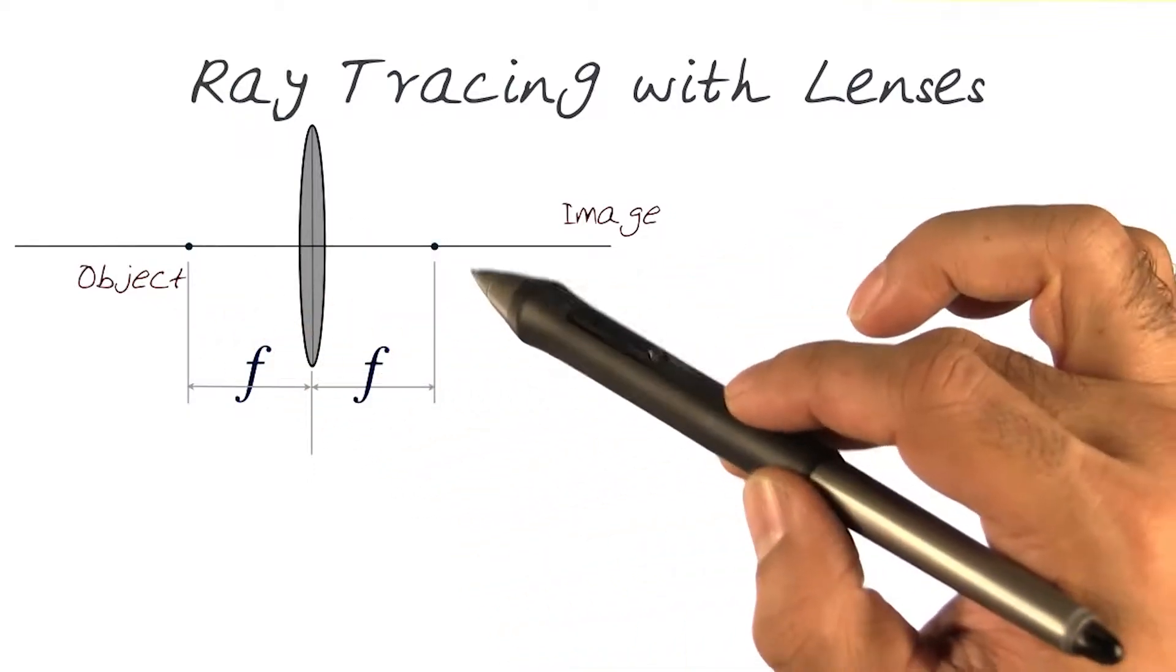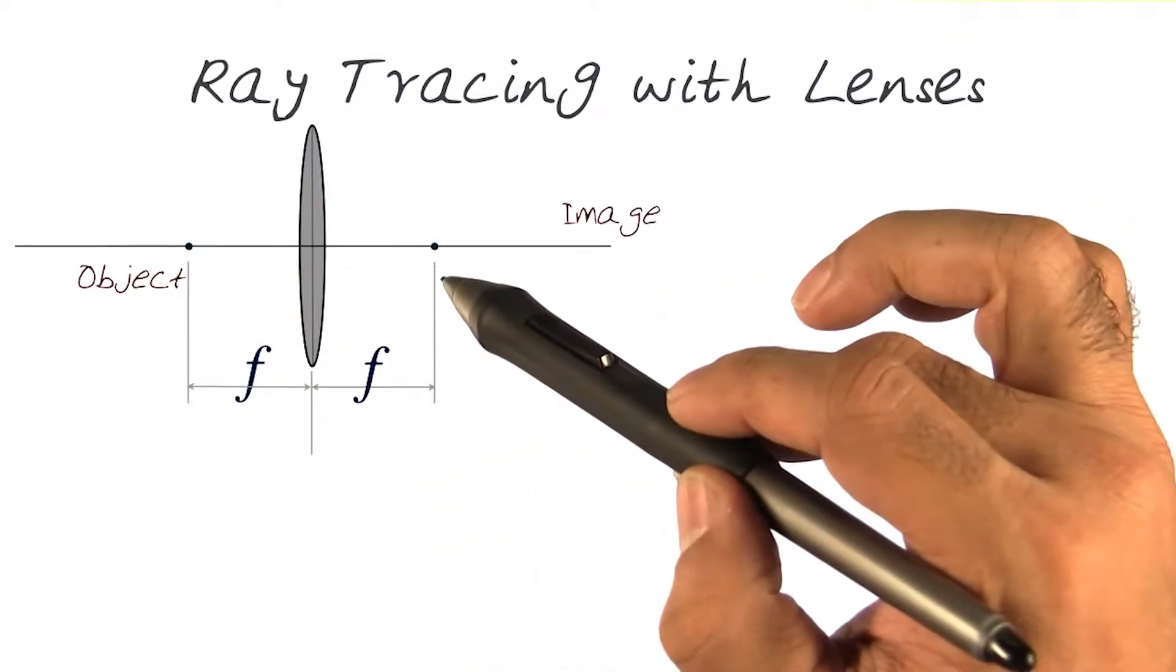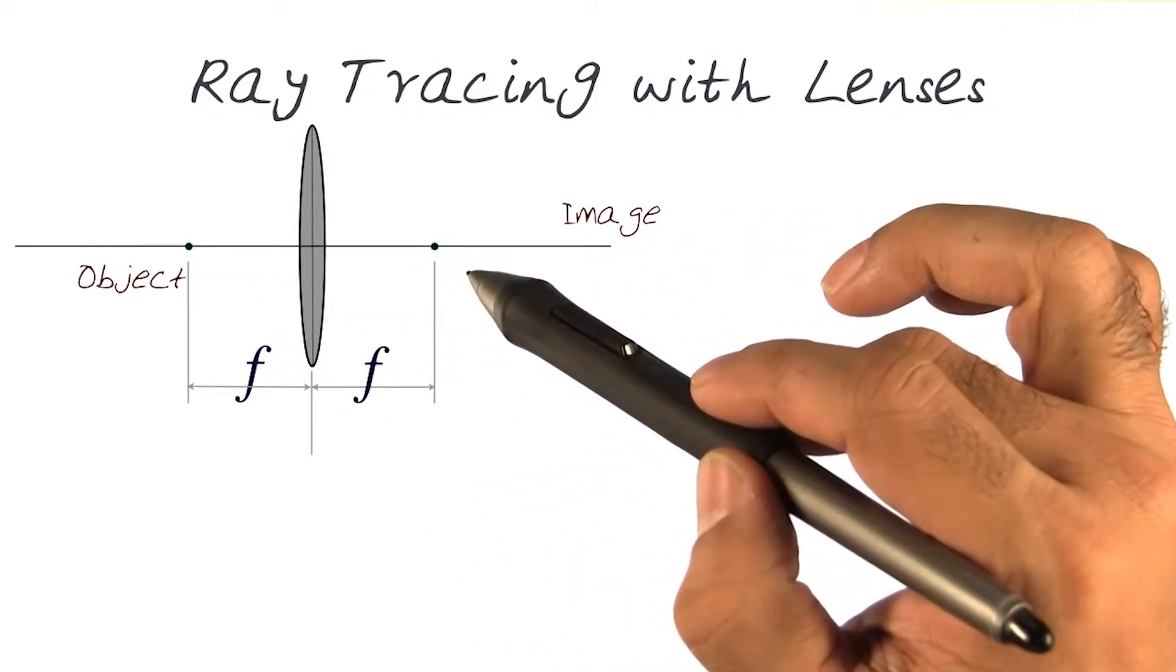Let's look at the same setup again. Lenses are symmetric, so the focal length will be on both sides of the lens.